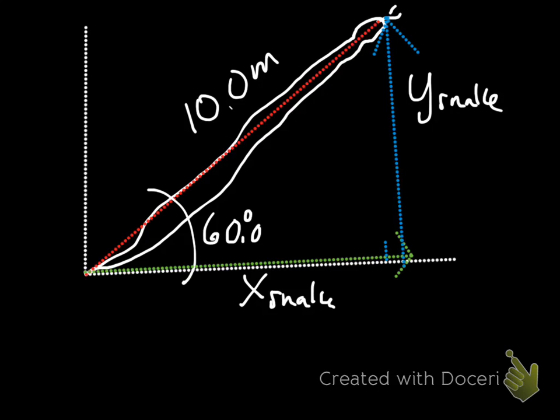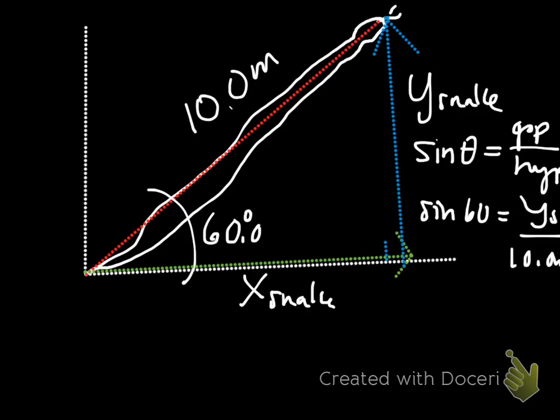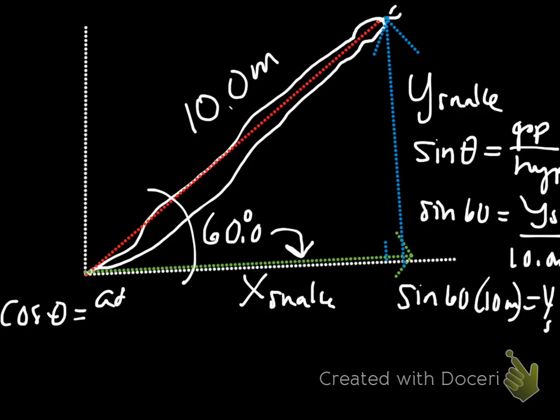So if we want to find this dimension of the snake's body, and we know that this is 10 meters, you've got the angle, and you've got the hypotenuse. How would you find the opposite? Well, the sine of theta equals opposite over hypotenuse. So in this case, sine of 60 equals the Y of the snake over 10 meters. So the sine of 60 times 10 meters equals the Y dimension of the snake. Does that make sense?